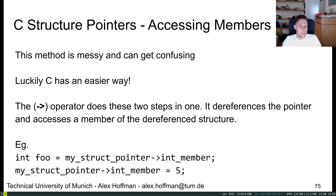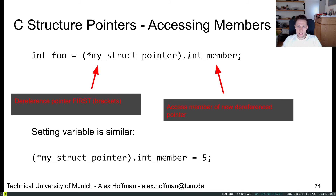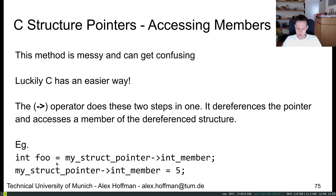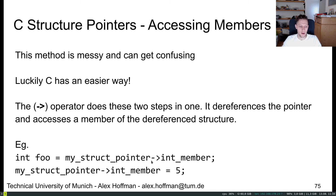C has an easier way: the arrow operator, which is a minus sign followed by a greater-than sign (->). This operator does both steps in one — it dereferences the pointer and accesses a member. So instead of the verbose syntax, you can simply say my_struct_pointer->int_member, and this does both in one step. It keeps the syntax very simple. Under the hood, it's dereferencing the memory address to get the structure and then accessing the appropriate member by moving forward in memory.